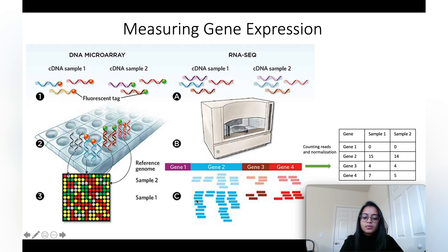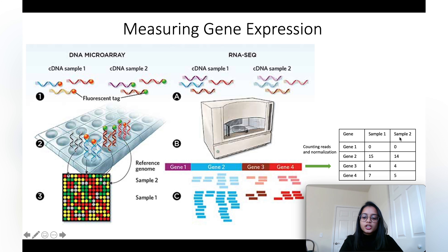Similarly, there are some reads that map from sample 1 and sample 2 to gene 2, so the row corresponding to gene 2 has some numbers equivalent to those reads. Gene expression data can be in the form of a raw count matrix, or normalization and bias correction steps can be performed on this matrix.